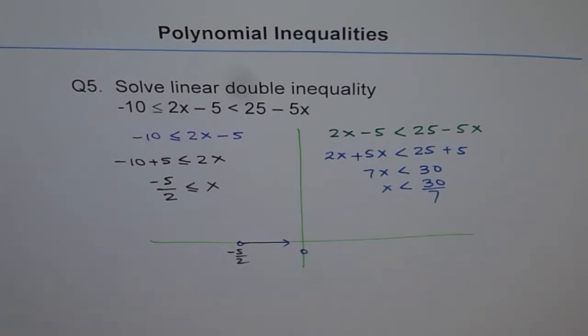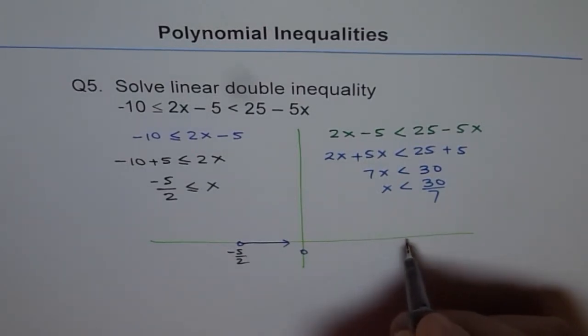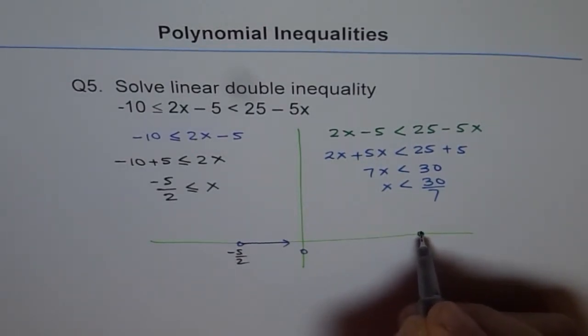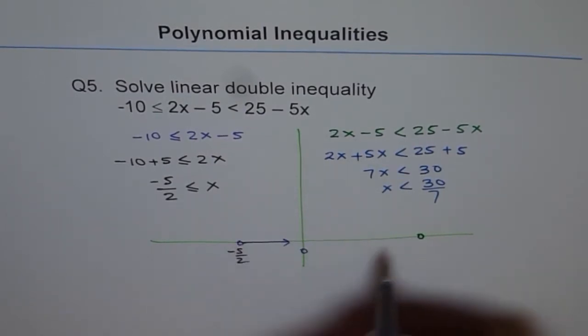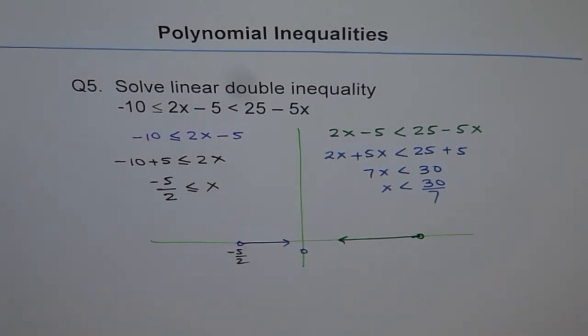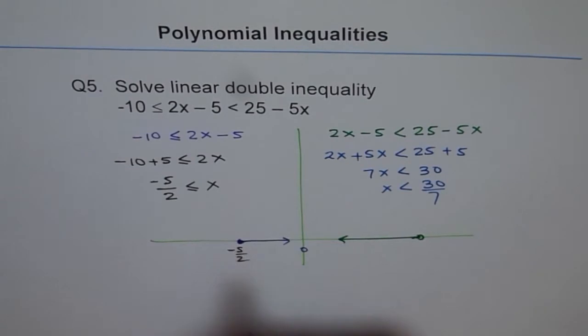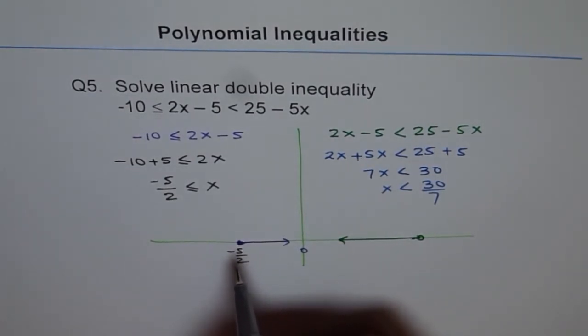So which gives us the result as, let's say 30 over 7 is here. Now this one, that one was included. I missed that part. So this is a line like this. Now the first one is x is greater than equal to, so I should have filled it up because this point is included.